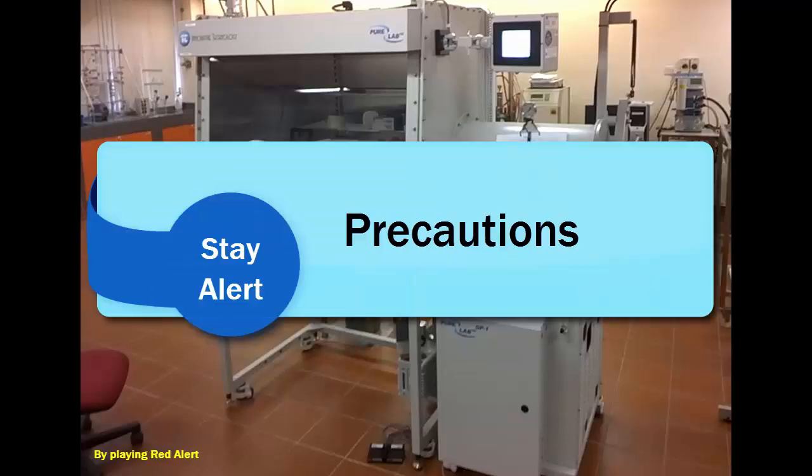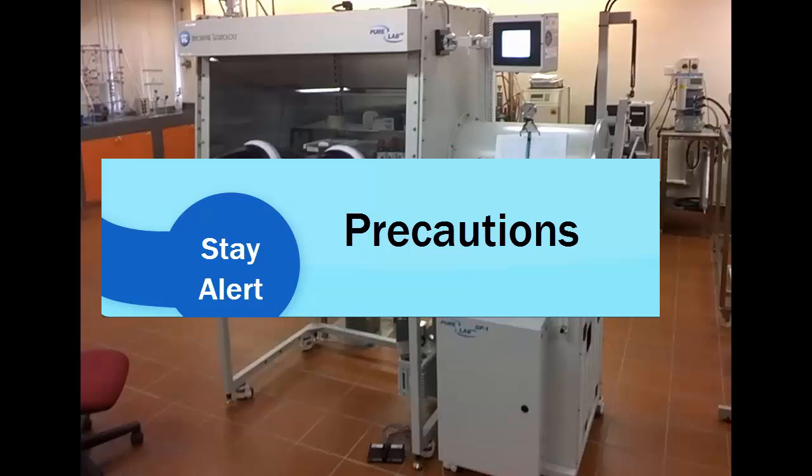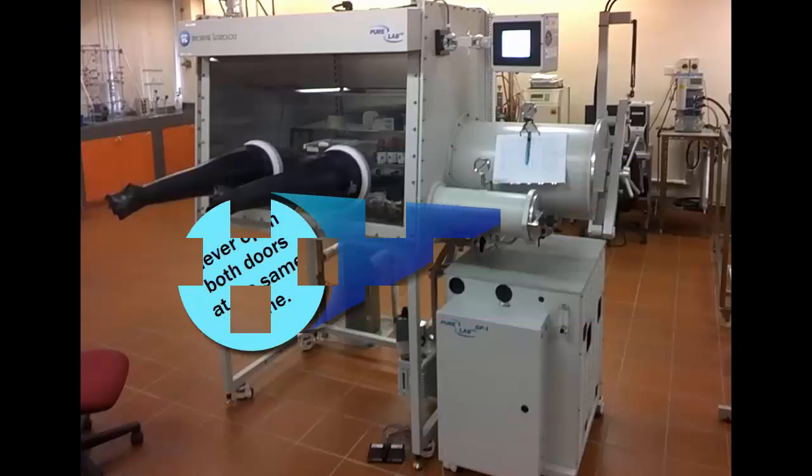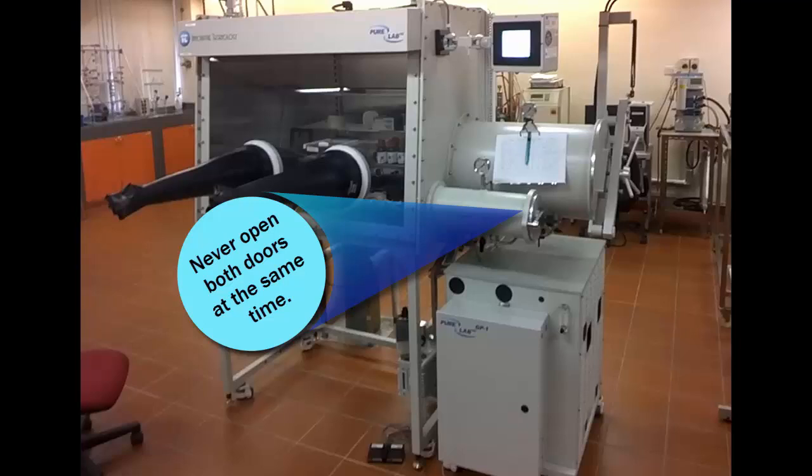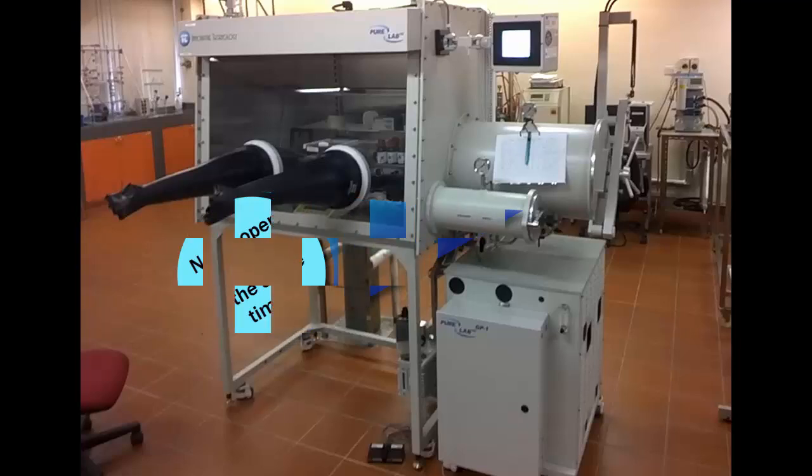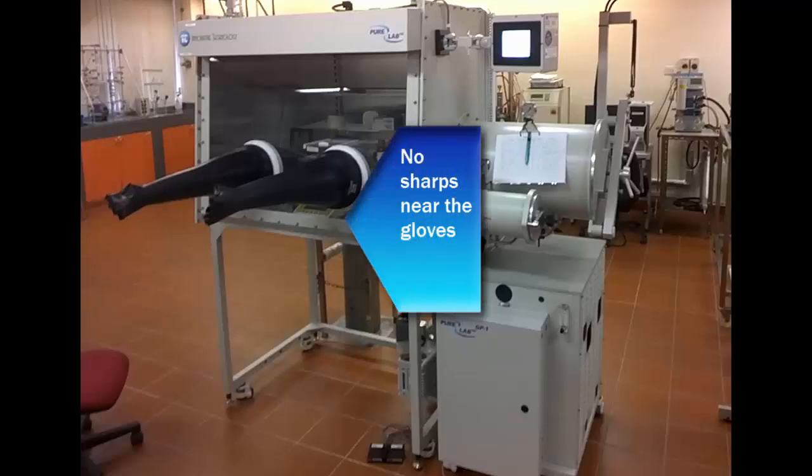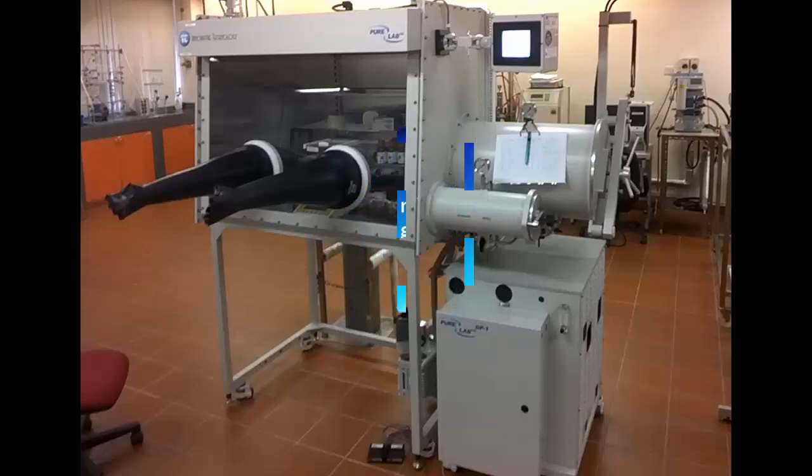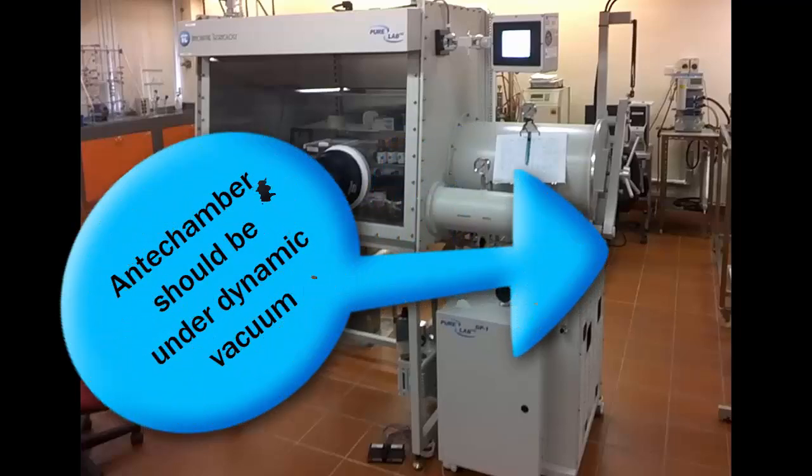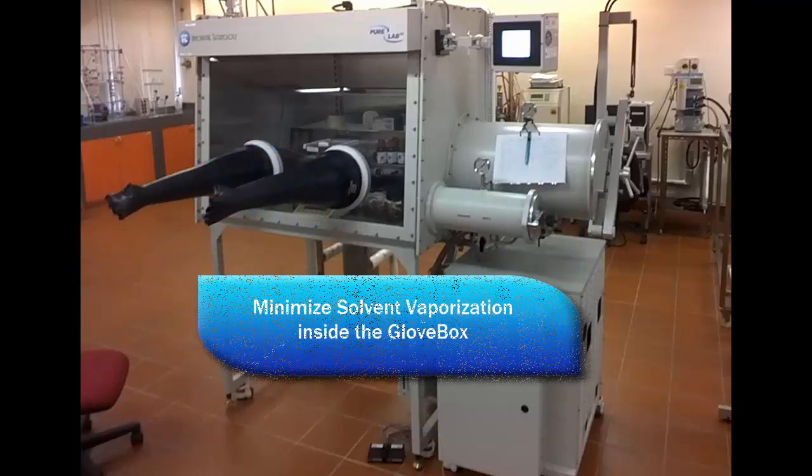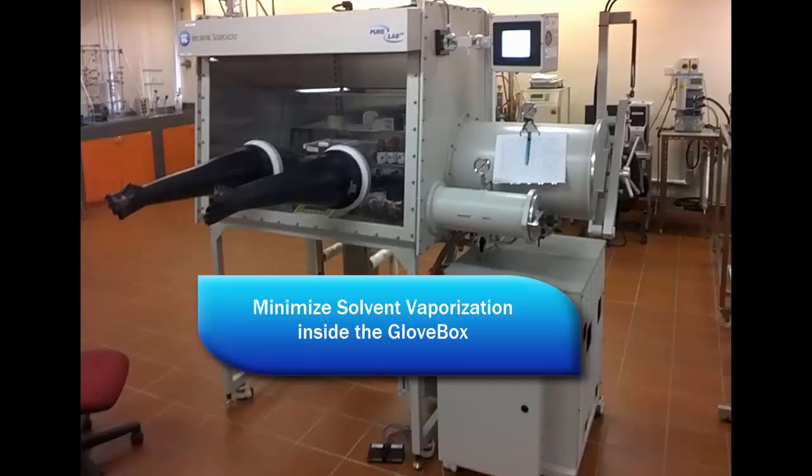There are several precautions when you are using the glove box. We know that the glove box is an isolation device, so never open it to air, meaning that you do not open both doors of the same antechamber and moving things into the box without pumping. No sharps should be near the gloves. We should minimize the use of sharps inside the box and use extreme caution when we have to do so. And the antechamber should be under dynamic vacuum, which should minimize solvent evaporation inside the glove box.